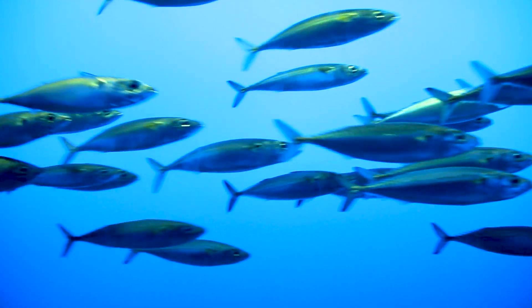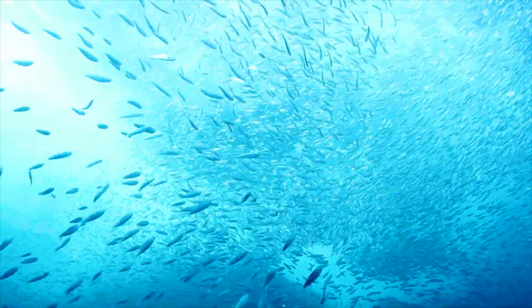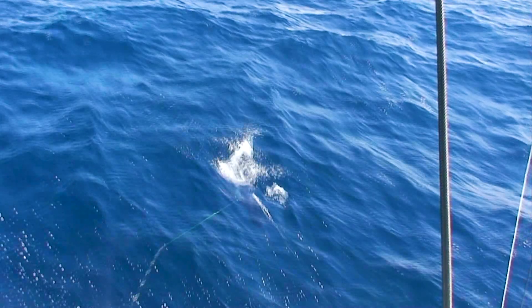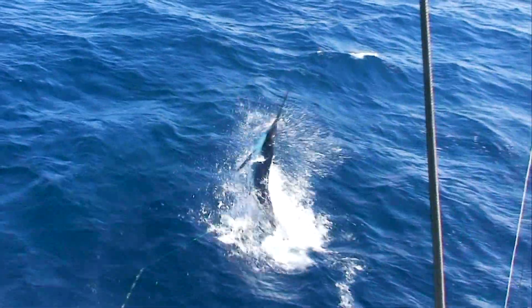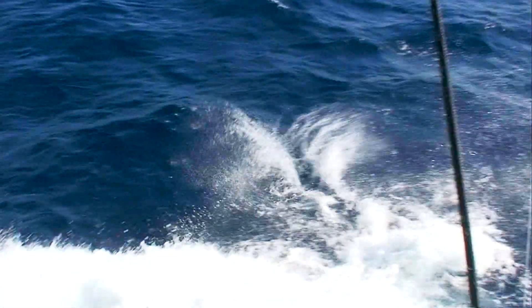Researchers have also observed that the stiffer a fish's backbone is, the faster the fish can typically swim. Whereas the cheetah is the world's fastest runner on land, the sailfish is the world's fastest swimmer in the water, due largely to the stiffness of its strong backbone.